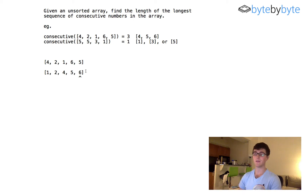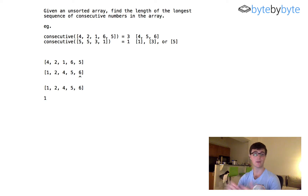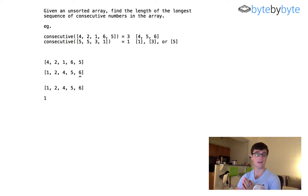If we create a hash set with these numbers, it will deduplicate them, so we'd end up with just one of each value. Then, starting with a number like 1, I can check whether the next consecutive number — 2 — is in the hash set. If so, I have a sequence of length 2. I can iterate through my values and for each one, check if the next number in the sequence exists, and keep going.